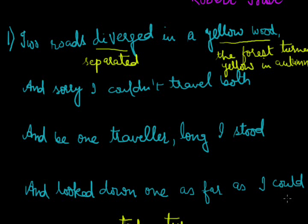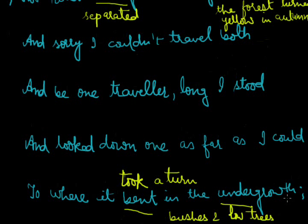'And being one traveller, long I stood, and looked down one as far as I could.' He stood there for a long time looking down the road as far as he could. The road bent and disappeared from his eyes in bushes and undergrowth. He was sorry because he was not able to travel on both roads at the same time, so he just kept looking as far as he could.